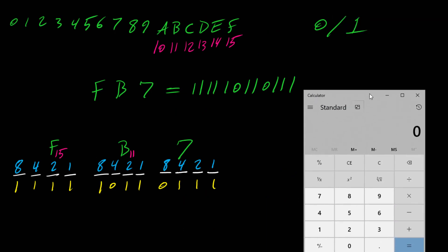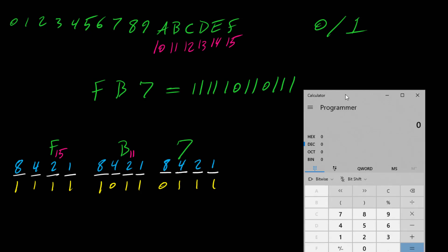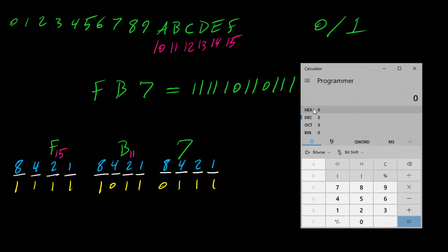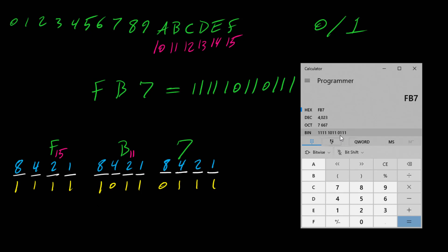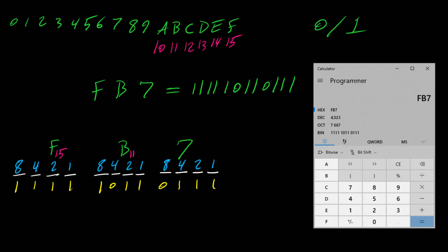Let's verify this using a calculator. We change the view from standard to programmer view and make sure hexadecimal is selected. Entering FB7 — and here we can see the binary result confirming our answer: 1111 1011 0111.